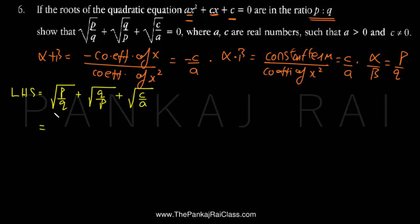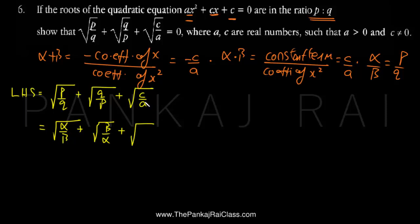Now we have to use all these conditions. We have been given that P/Q equals alpha/beta, so substituting, this becomes root of alpha/beta plus root of Q/P, which is beta/alpha, plus root of C/A. As you can see, C/A is actually alpha times beta, so I'll write root of alpha beta.